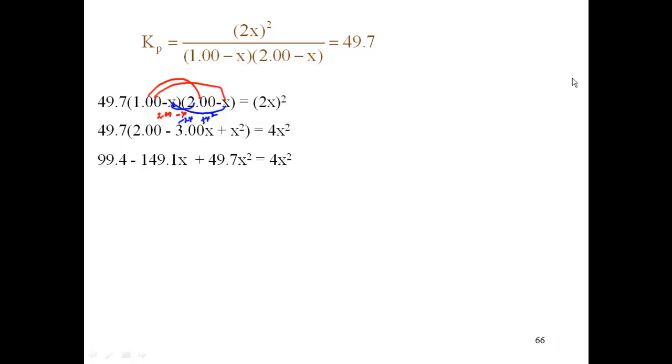Which gets me 99.4 minus 149.1X plus 49.7X² equal to 4X². Now what I'm going to do is subtract 4X² from both sides. That way I can get this equal to 0.